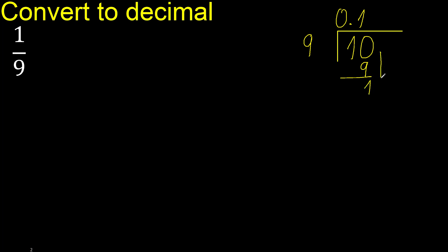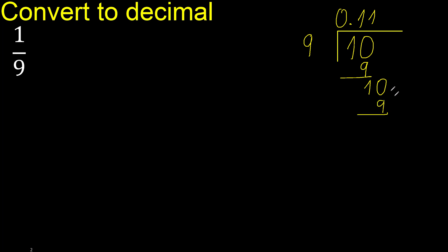That remainder is not a complete number, therefore complete — always complete with 0. Point is here. 10: 9 multiplied by 1 is 9. 10 minus 9 is 1. Complete. 9 multiplied by 1 is 9. Subtract. Complete.